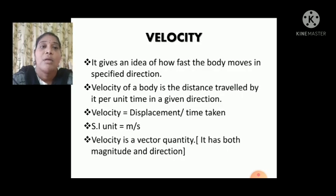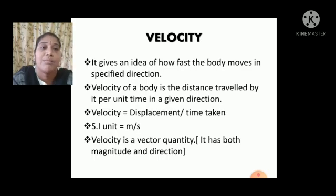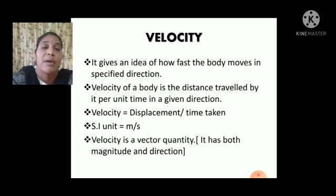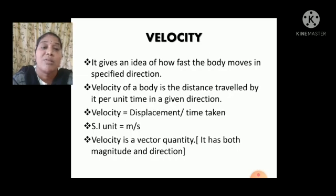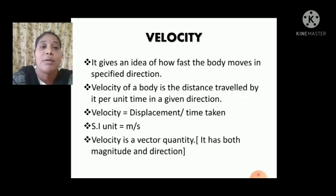The formula for velocity is displacement by time taken. The SI unit for velocity is meter per second. Velocity is a vector quantity, meaning it has both magnitude and direction.